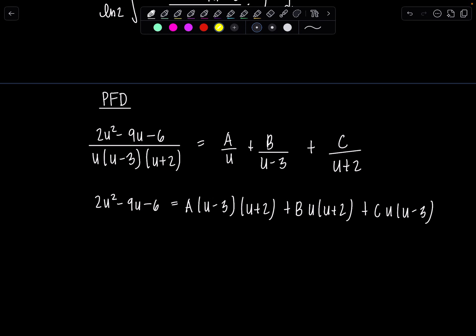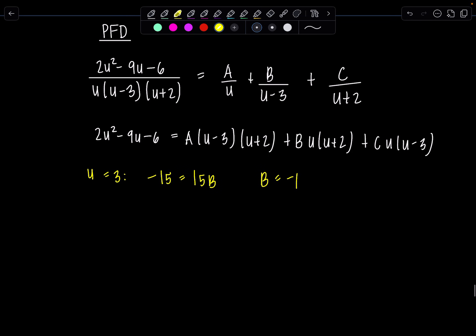I'm going to substitute in first. Let's let u be positive 3. Then on the left hand side I'll get -15 = 15b. So b is -1. And then if I let u be -2, on the left hand I get -6a. So a is 1.